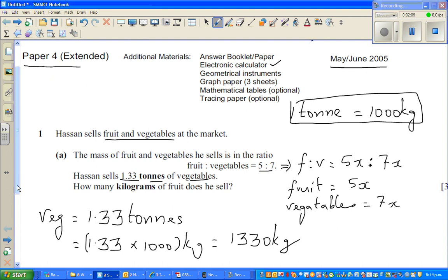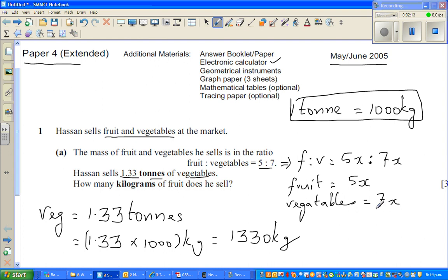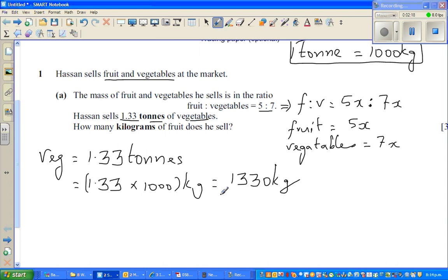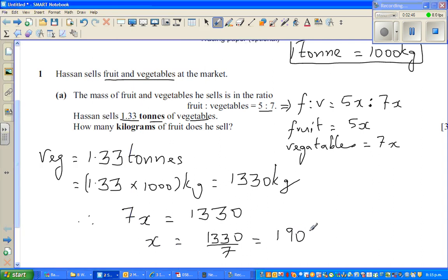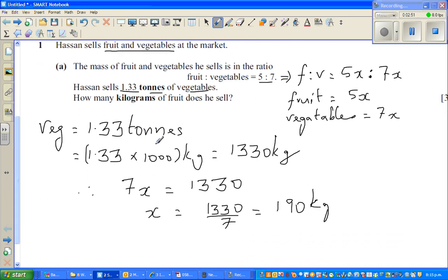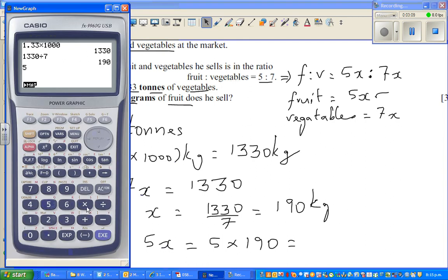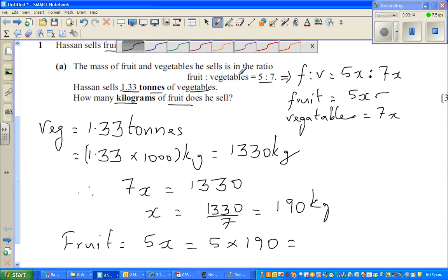Now can I equate 7x with 1330? Because this is vegetables, so 7x equals 1330. If you divide both sides by 7, 1330 divided by 7 gives you 190 kg. So x is 190 kg. The question is how many kgs of fruit did he sell? Fruit is 5x, so that is 5 times 190, which gives you 950 kgs of fruit.